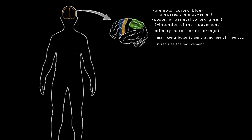Everything starts in the brain. First we decide to make a physical movement through the motor cortex, different zones having different roles.